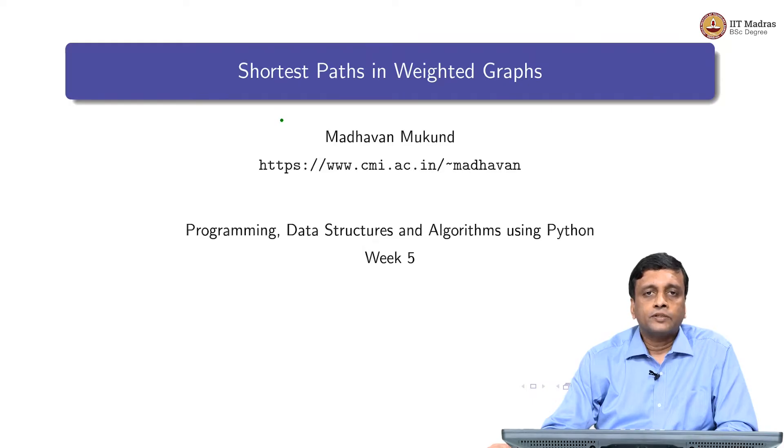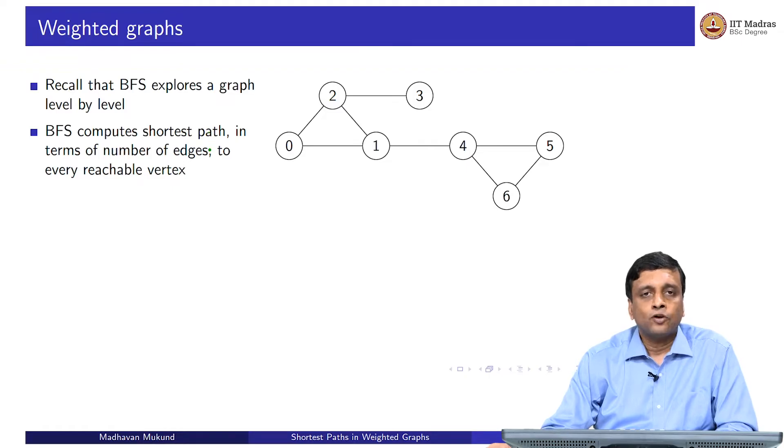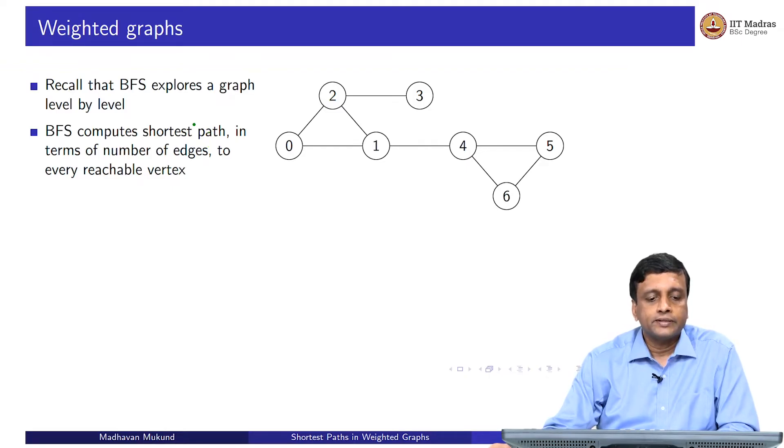So far we have been looking at graphs which consist of nodes and edges. Now we will look at weighted graphs where there are also some values or costs attached to the edges. Remember that BFS has the property that it will find out level by level the shortest path from an initial node to every other vertex in the graph. But if we have some costs associated with the edges, then this shortest path in terms of the number of edges is not necessarily the shortest path that we are interested in.